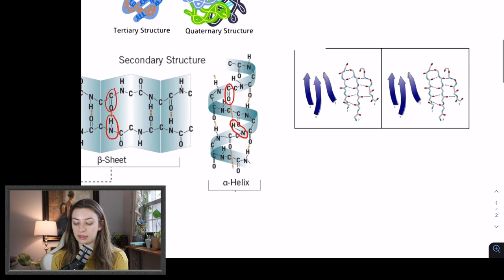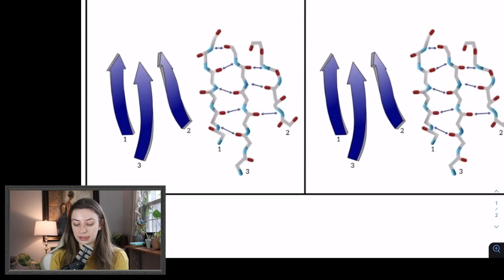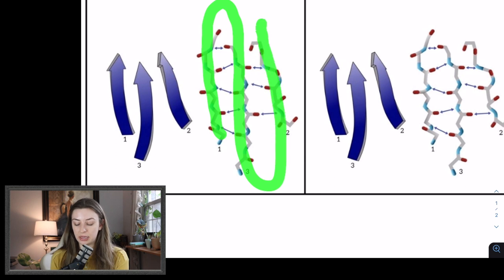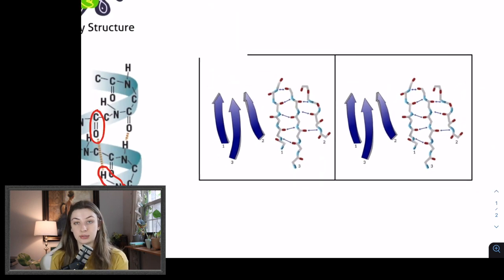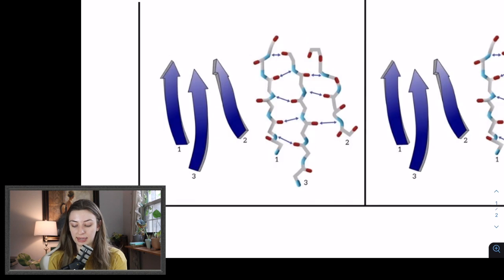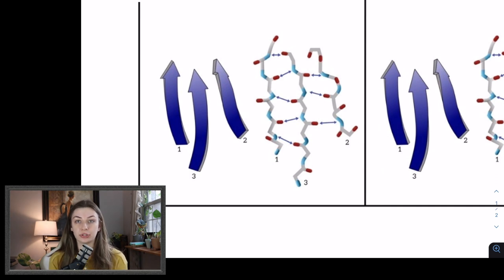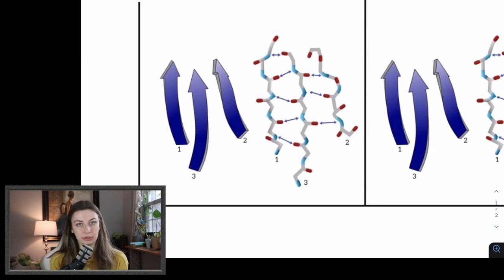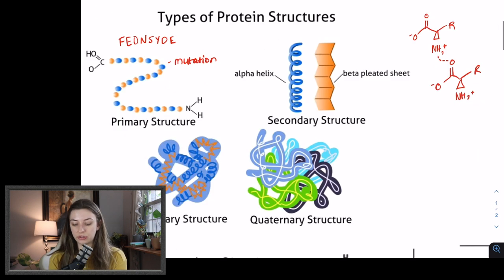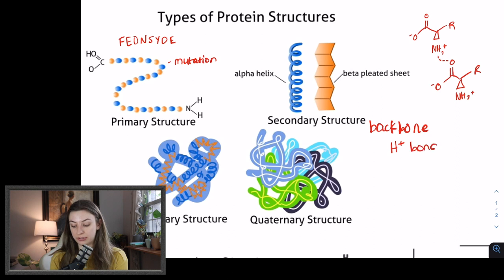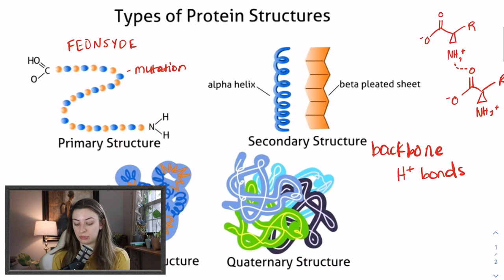You can split hairs and say the strands can go in different directions, which is when you're talking about parallel versus anti-parallel beta pleated sheets — that's pretty low yield for the MCAT. You should know it, but I'm not going to cover it in a high yield video like this. So that's secondary structure. What you have to know: it is backbone interactions and it is all about hydrogen bonds. That's the most important thing.